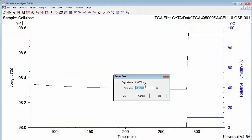Select Enter. The initial sample size has gone from 4.93 to 4.85 milligrams. This new weight will be used as the initial 100% sample size.